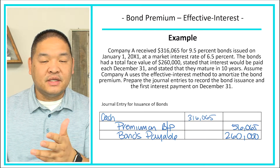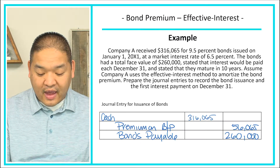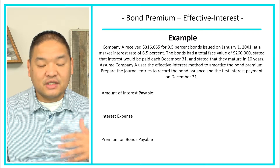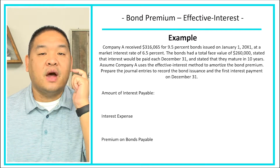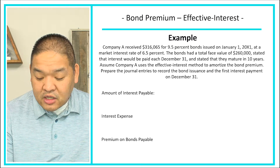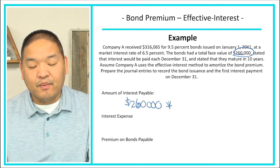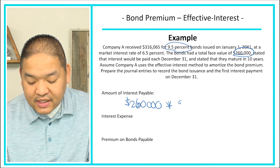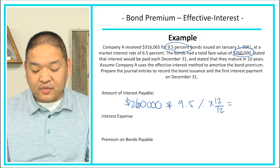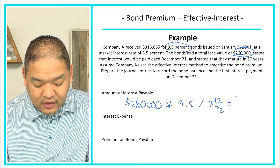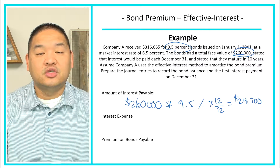At the end of the first year, we need to calculate the interest expense and the interest payable. To calculate interest payable, we need the face value of the bond multiplied by the stated interest rate. So $260,000 times 9.5% times 12/12 gives us $24,700. So we've got $24,700 of interest payable — that's what we owe to our bond holders.